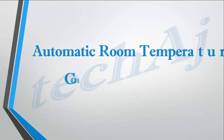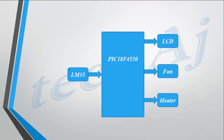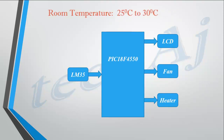In this video we are going to discuss automatic room temperature control using PIC18F4550. We want to design a system which will maintain the temperature of a room between 25 degrees Celsius and 30 degrees Celsius.